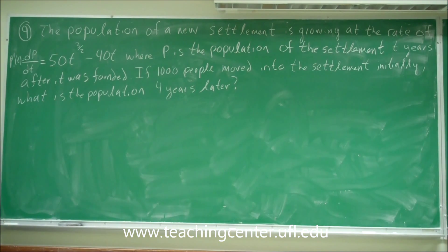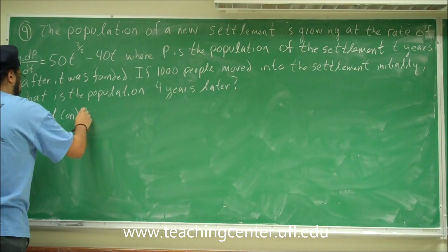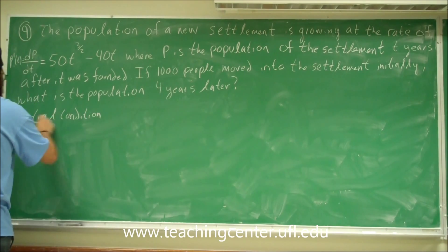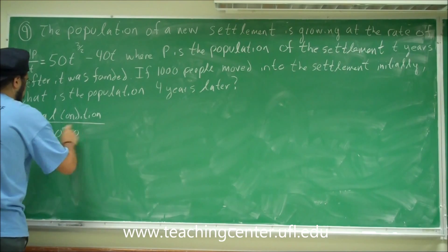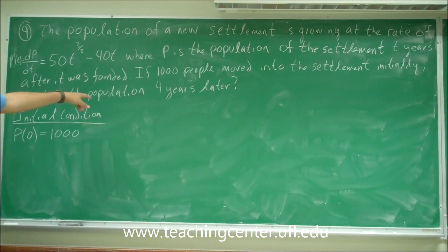So they give us p prime, the rate at which the population is changing, and they give us an initial condition. Let's state the initial condition. The initial condition is when t equals 0, initially, we have 1,000 people in the settlement. And we want to find out how many people in the settlement are there 4 years later. So we want to find p(4).